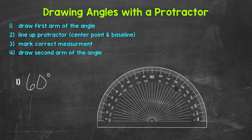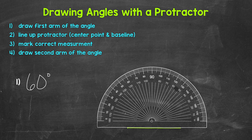Let's jump into number one, where we need to draw a 60 degree angle. Our first step when drawing angles using a protractor is to draw the first arm of our angle. All we need to do is use a straight edge to draw a straight line — you can use the straight side of your protractor or even a ruler. I'm going to draw a straight line like this, and put a small dot on one end to show where our vertex will be. This can be on either end of the line. And that's our first arm of our angle.